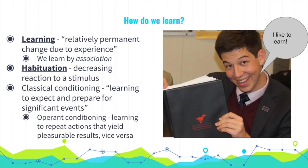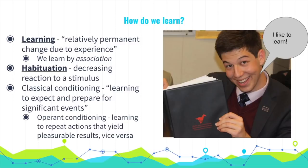The father of classical conditioning is Russian scientist Ivan Pavlov. His experiments with dogs provide a remarkably clear example. Pavlov noticed that dogs began to salivate when they smelled food. He then began ringing a bell whenever they were served food, repeating this for several weeks. After about 20 days, he was able to cause salivation in a dog merely by ringing the bell.